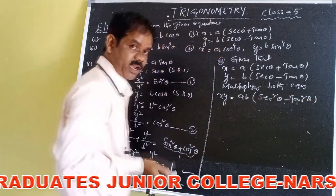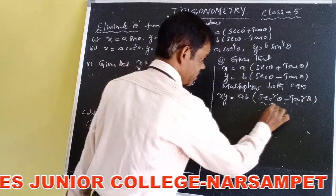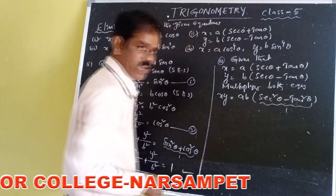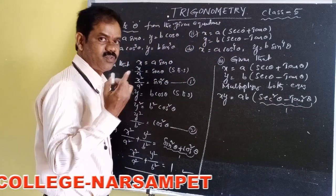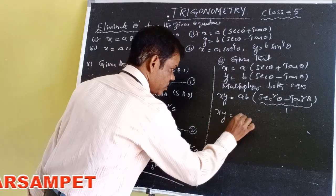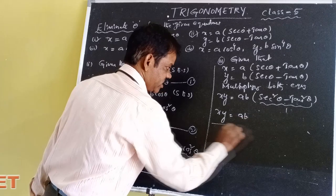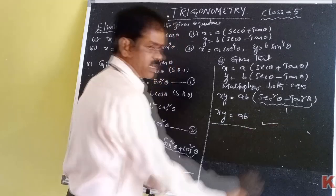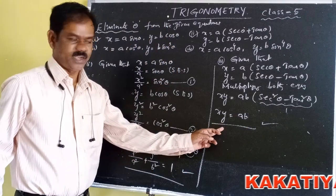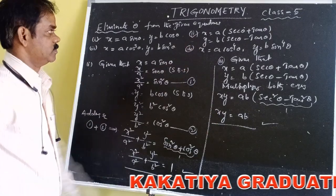According to the identity property, sec²θ - tan²θ = 1. So, x·y = a·b × 1 = ab. Here also, theta is eliminated. That is the concept of the second problem.